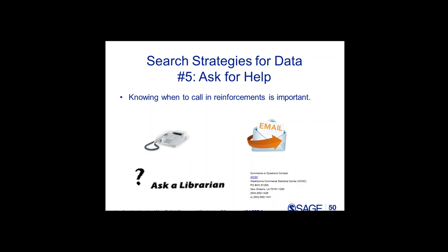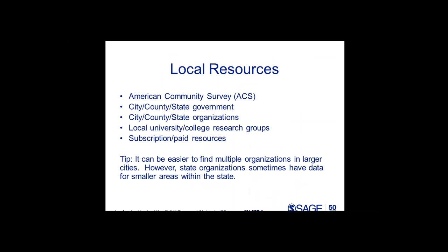Let's talk a little bit about local resources. Social science faculty sometimes want students to find statistics and data about the city, county, or state in which their college or university is located. This could include crime rate, healthy food options, transportation, education, poverty, health issues, and relationships between those things. Where would you direct a student? The first would be the American Community Survey, or ACS, which I'll discuss in more detail shortly. Others include local government sources, local nonprofits and other organizations, and local colleges and universities that also have research groups studying particular issues in the area where the school is located.